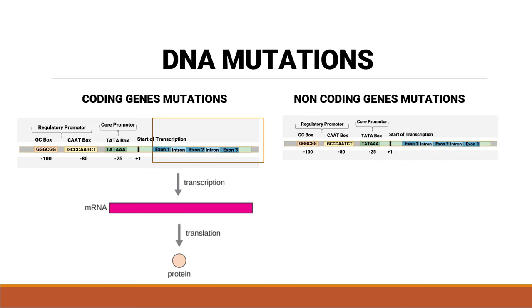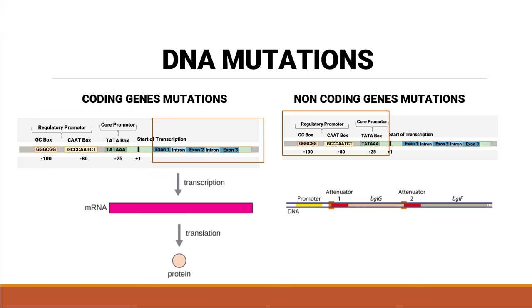Non-coding mutations can be present in the regulatory part of the DNA, which controls the amount of protein that needs to get synthesized, and they are also present at the attenuator site where the process of transcription will end. If the mutation is present in that region, it falls under the category of non-coding genes. But if they transcribe and translate into a protein and that protein is affected, then it will be called a coding gene mutation.